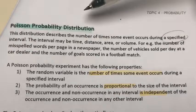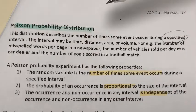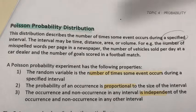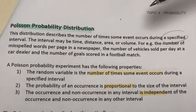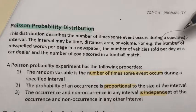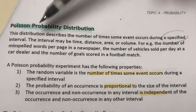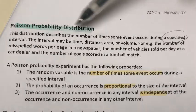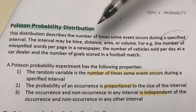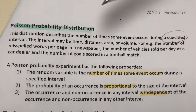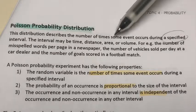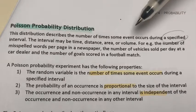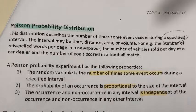The Poisson probability distribution basically describes the number of times some event occurs during a specified interval. The interval may be in terms of time, distance, areas, or volume. Here are a few examples.